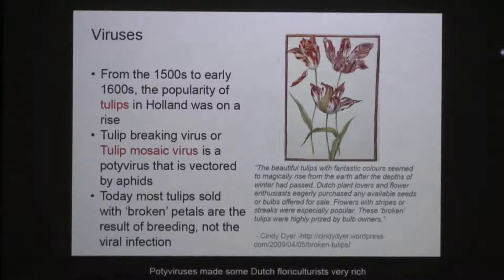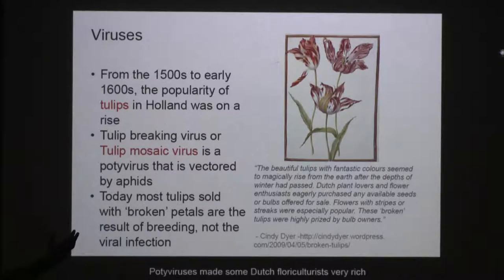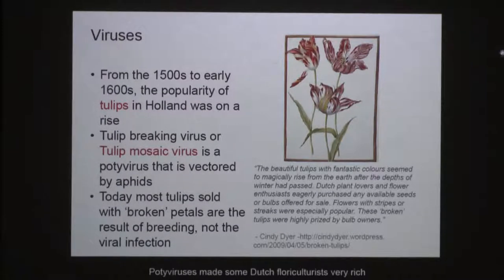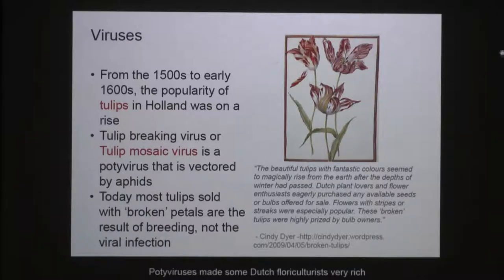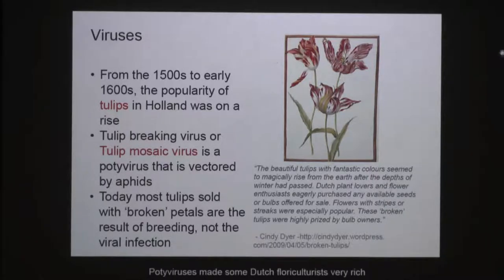Viruses have always been with us. We've painted pictures showing viral-like symptoms — tulips with breaking patterns caused by the potty virus. If you see breaking patterns in your dahlias, it's inevitably due to a viral infection. Around 1500–1600, the Dutch became very rich from a viral infection. These tulips were selling for about 10,000 guilders — today's value around $1,200 US dollars — and on average a good salesman was selling $60,000 worth of tulips in Holland at the peak.